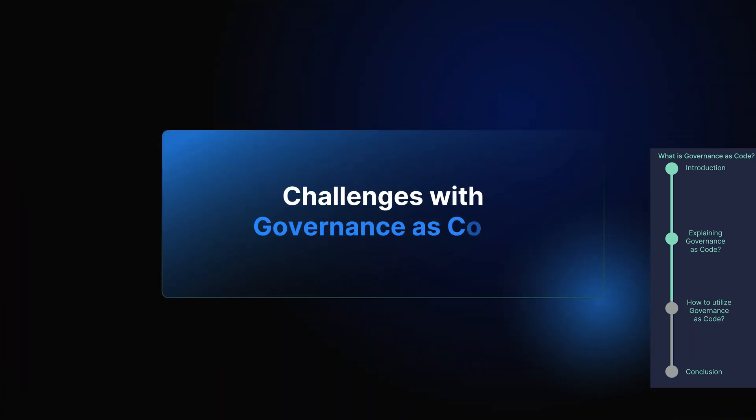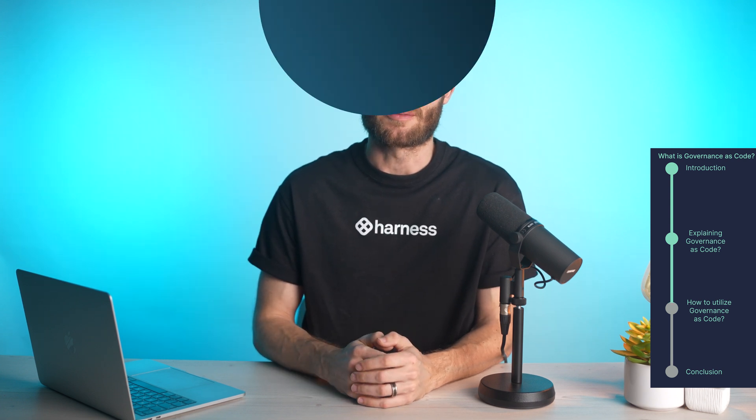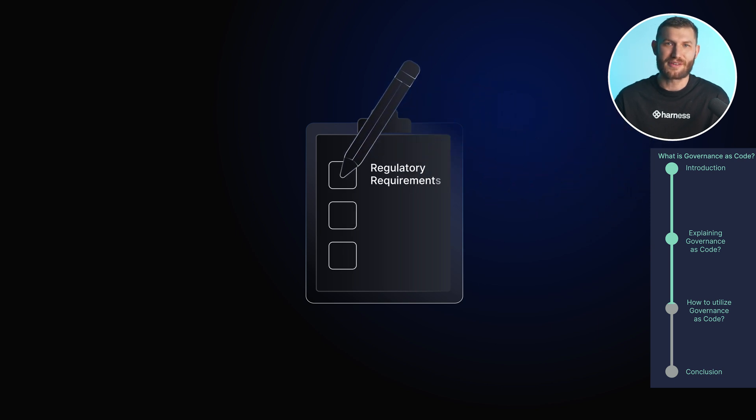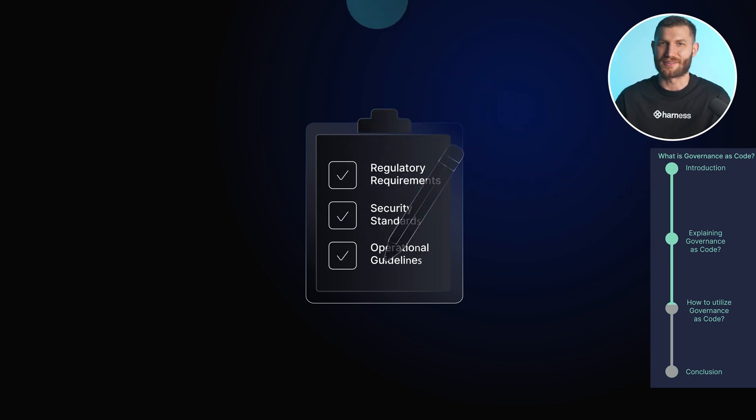Challenges with governance as code. Of course, implementing governance as code isn't without its fair share of challenges. First, defining the right policies can be tricky. You'll need to make sure you cover all the bases — regulatory requirements, security standards, and operational guidelines — which requires collaboration between various teams to get it right.